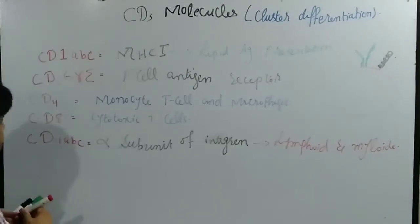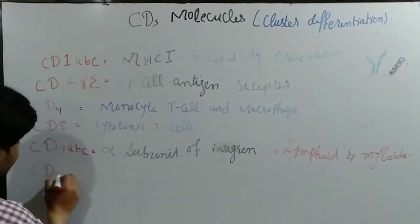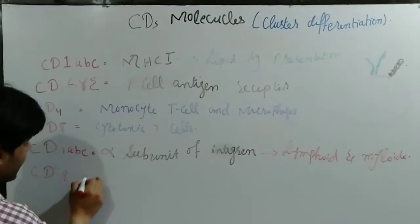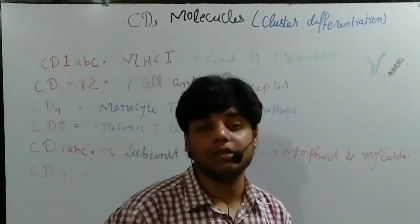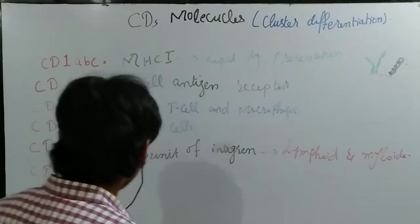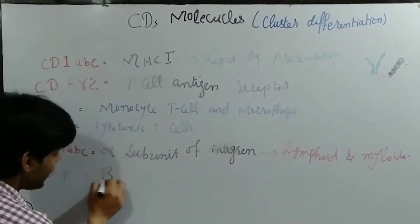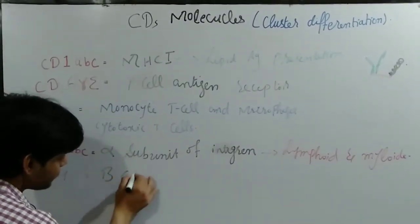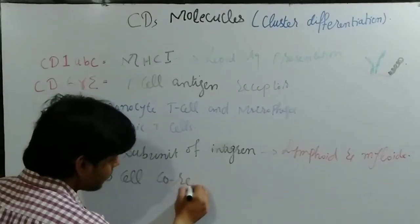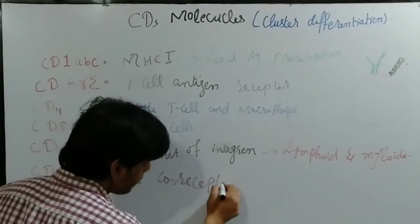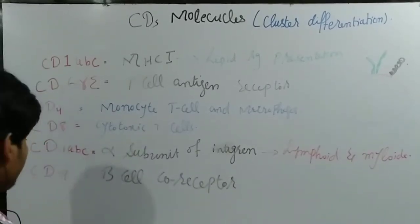Then we have CD19. CD19 is actually the B cell coreceptor — it functions as the B cell coreceptor.